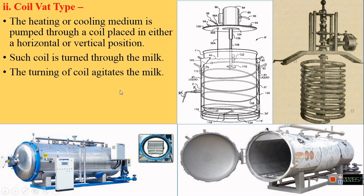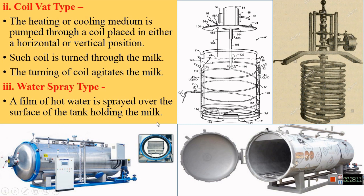The third type of batch pasteurizer is the water spray type. In this, a film of hot water is sprayed over the surface of a tank holding the milk. These are tanks within which the milk is placed, and at the top there is a provision for spraying hot water. Through these sprayers, hot water is sprayed so that the milk inside gets heated and pasteurization takes place. This is the simplest design of the batch pasteurizer.